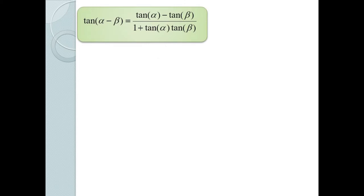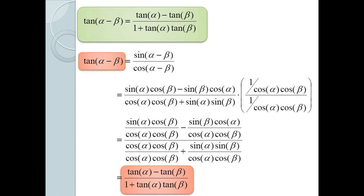We can also derive a formula for tan(α − β). Since tan(α − β) = sin(α − β) / cos(α − β), this expands to (sin α cos β − sin β cos α) / (cos α cos β + sin α sin β). Multiplying numerator and denominator by 1/(cos α cos β), the cosines cancel and we're left with (tan α − tan β) / (1 + tan α · tan β).